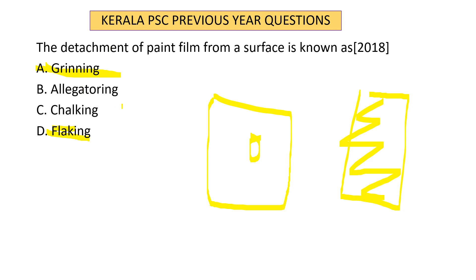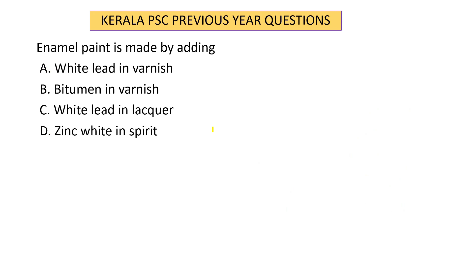Chalking is a defect in which a white chalky powder forms on the painted surface. Chalking is mainly due to insufficient oil or primer in the paint.